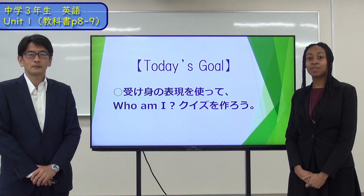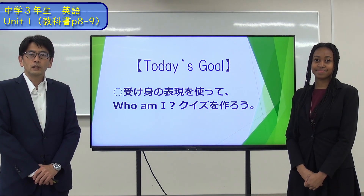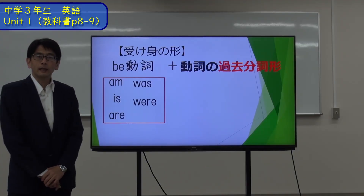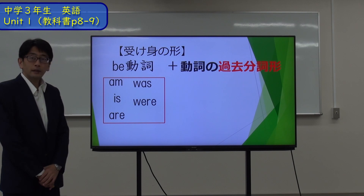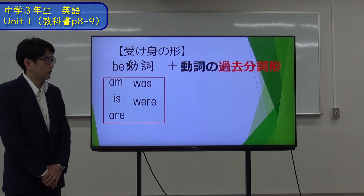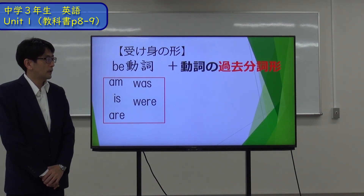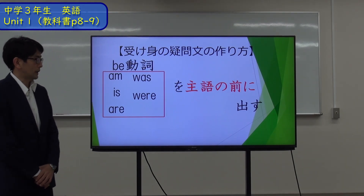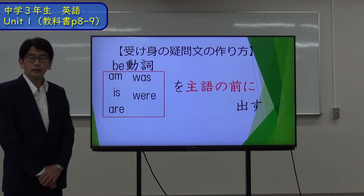Okay, so let's check how to make passive voice questions. The passive form uses a be verb — in the present: am, is, are; in the past: was, were — together with the past participle of the verb. To make a passive voice question, move the be verb in front of the subject.